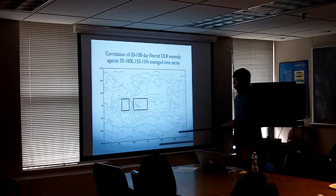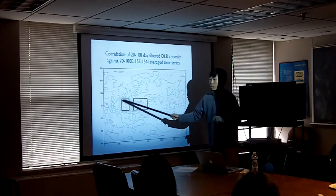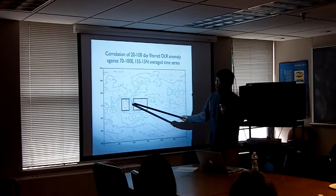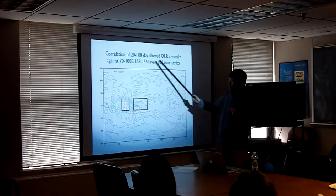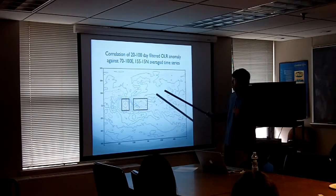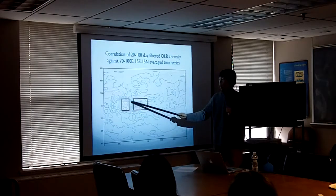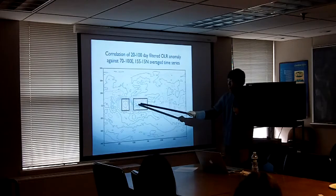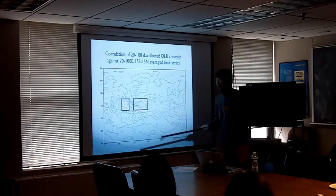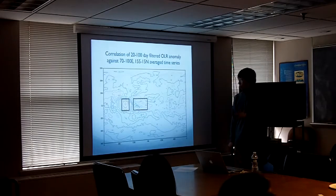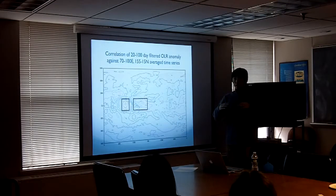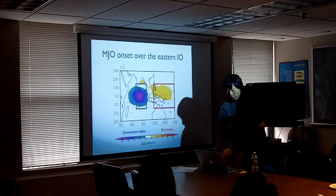First, I want to make the point that convection over the Indian Ocean and over the Western Pacific are not very tightly coupled. This shows the correlation of the bandpass-filtered OLR globally against the area-averaged OLR over the Indian Ocean. The correlation for the Western Pacific region is about -0.15, explaining only about 2% of variability. So I made a scatter plot between the area-averaged OLR for the Indian Ocean region and for the Western Pacific region, and you can see huge scatter in the dry index, consistent with this low correlation.